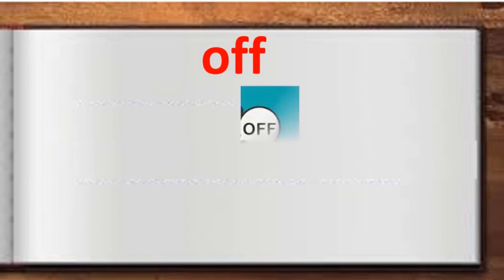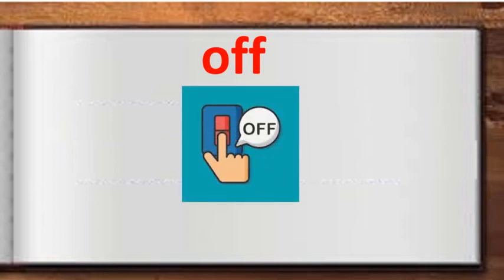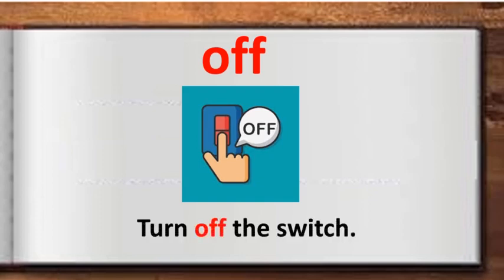The word is 'off.' Children, please repeat after me. Off has various meanings, but here I have used it to refer to 'not on' — it is the opposite of on. You can see the picture where 'off' is written. I have used this word in a sentence: turn off the switch.